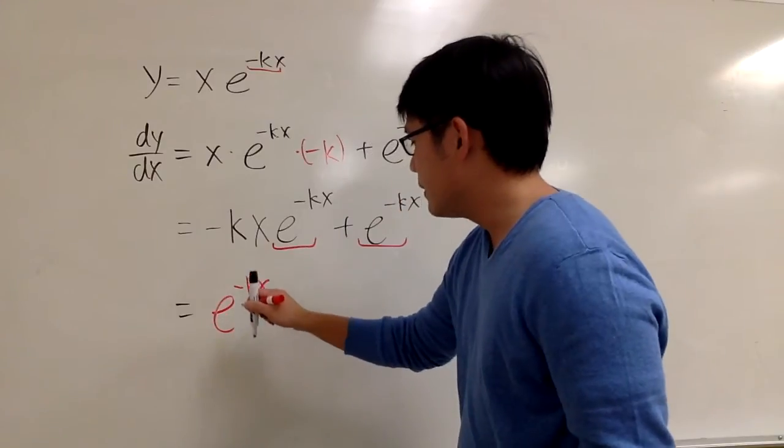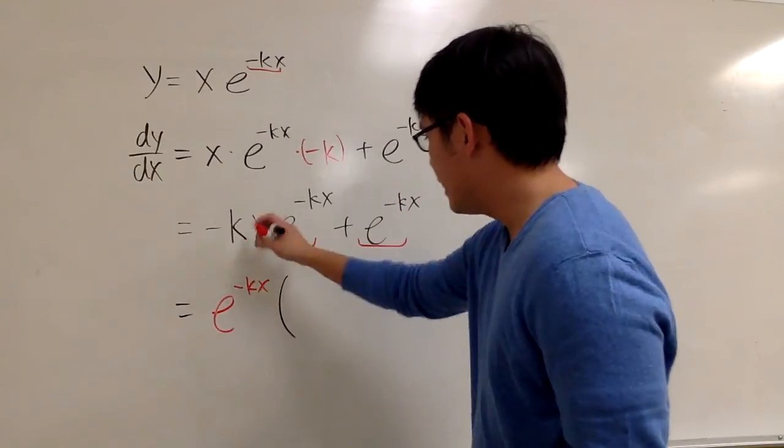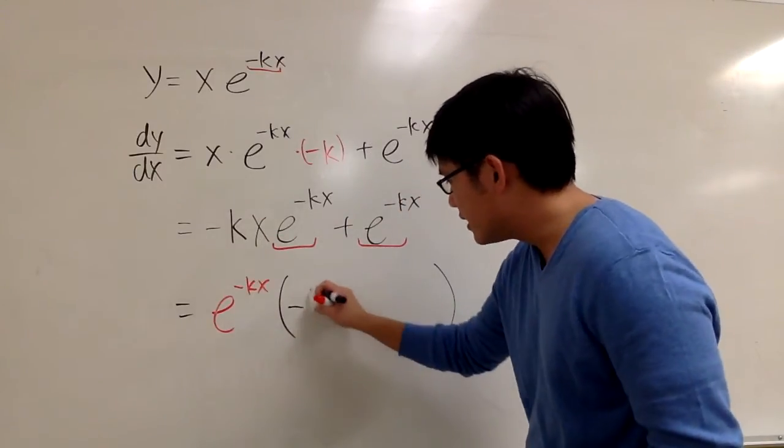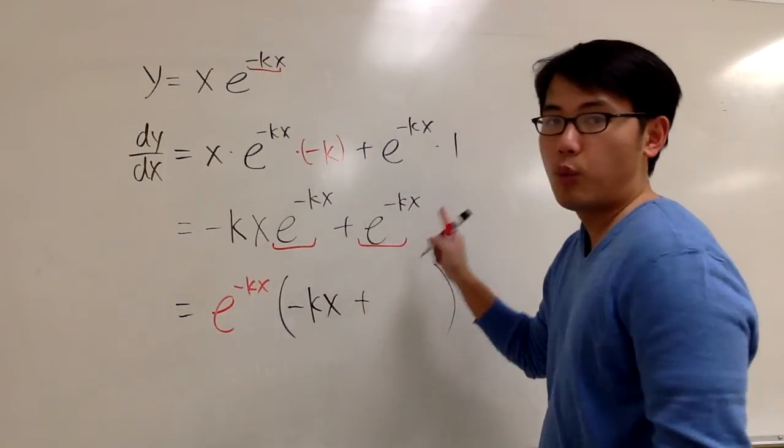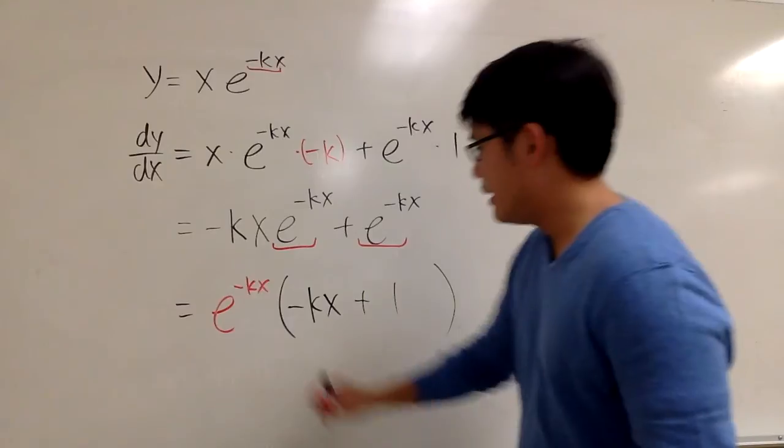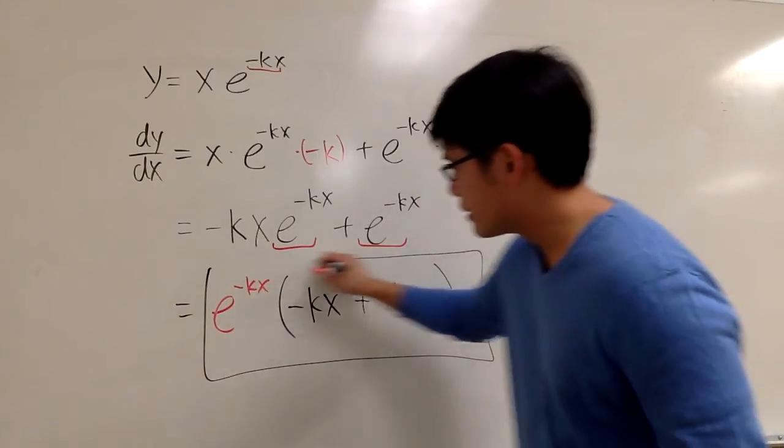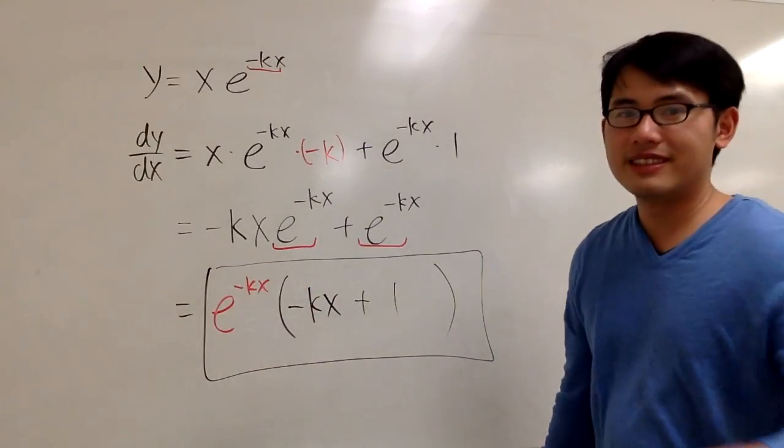I can factor this out, negative e to the negative kx, and then the leftovers are negative kx, plus we have one left. And this right here will be the answer.